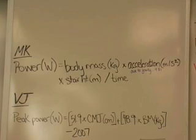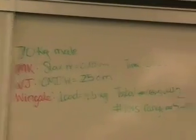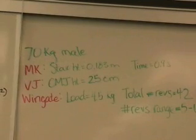meters per second squared times the stair height in meters divided by time. So, for example, if we have a 70 kilogram male and the stair height is 0.183 meters and it takes him 9 seconds